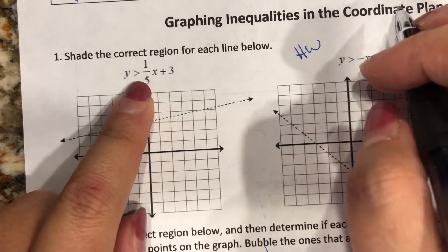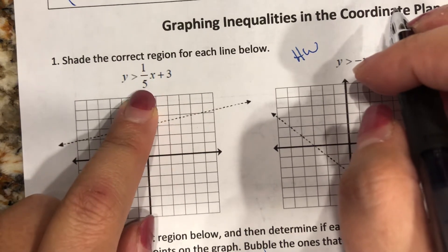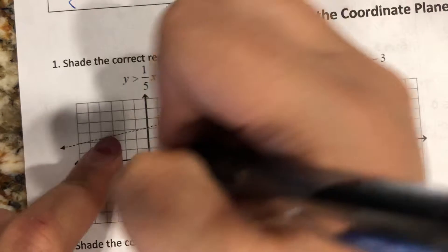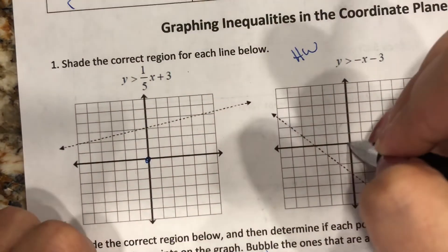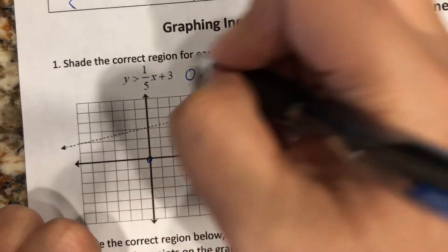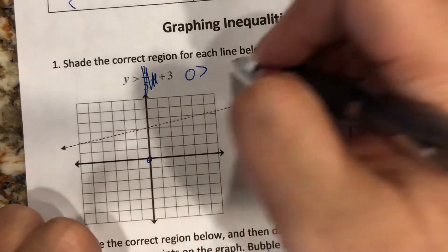So what am I doing? Shade the correct region of each line below. So I have y is greater than one-fifth x plus three. All I want to know is again (0,0), and then for you guys (0,0). So plug in zero is greater than - we don't care about this guy.